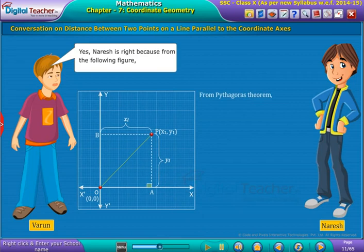So from Pythagoras theorem, we have OP square is equal to OA square plus PA square, which is equal to x1 square plus y1 square, which is in turn equal to root x1 square plus y1 square. So Naresh is correct.